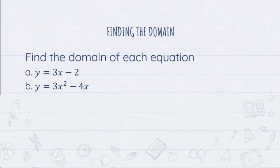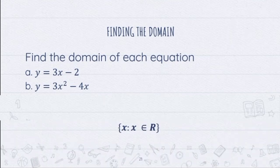In letter A, we have y equals 3x minus 2 and in letter B, we have 3x squared minus 4x. These are all polynomial functions. A polynomial function is a function having non-negative integer powers of x. So if we are given a polynomial function, then our domain is an element of real numbers.